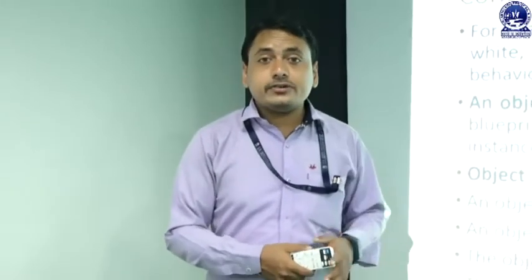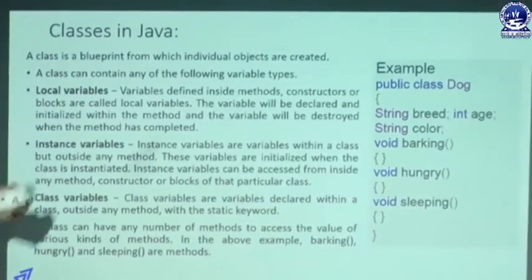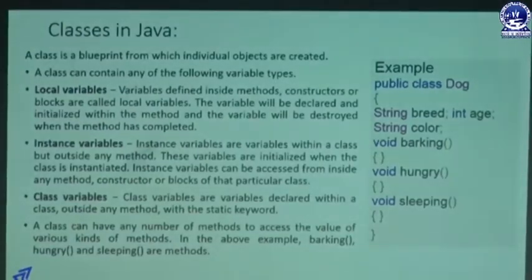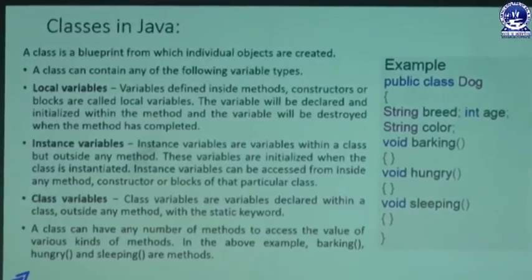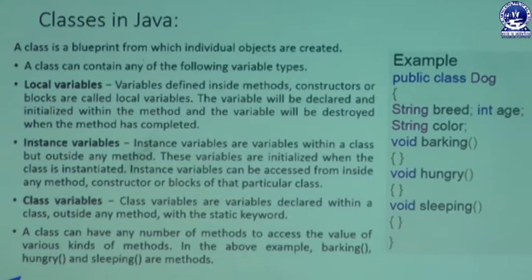Before discussing classes, let us know what is the meaning of a class. A class is a specific type of blueprint from which individual objects are created. A class can contain the following variable types: local variables, instance variables, and class variables.